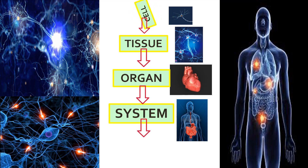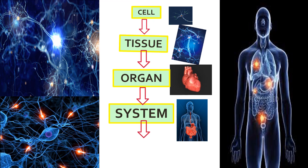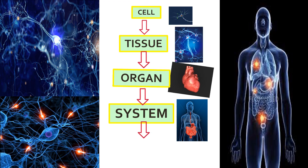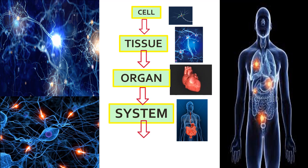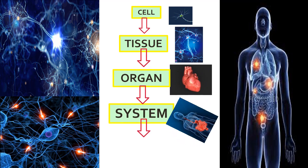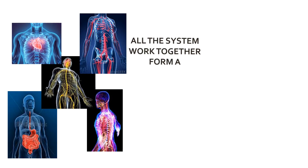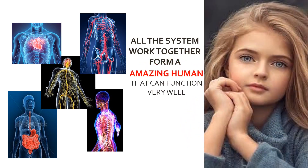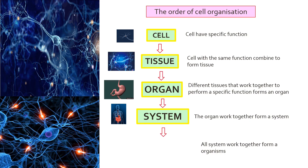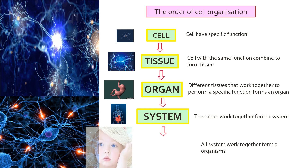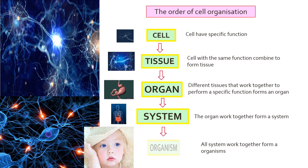Now we know that cells form a tissue, tissue forms an organ, and organs form a system. All the systems work together to form an amazing human that can function very well. Now the cell organization is complete.